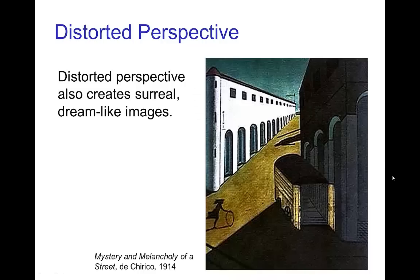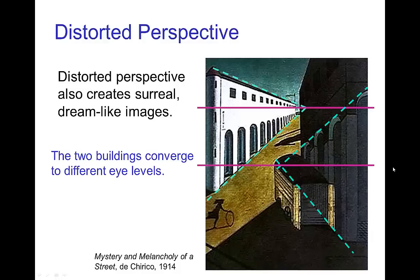Perspective is also something that can be distorted to create surreal, dreamlike images. This painting has very strongly distorted perspective — the parallel lines of these buildings converge back to two different eye levels for the two buildings. Of course, this was an intended effect by the artist.